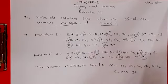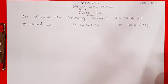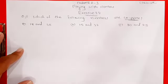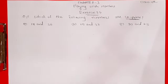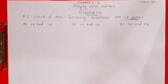Clear students. So in this way we can solve question number 4. This is question number 5: which of the following numbers are co-prime? First we need to know what co-prime means. If two numbers have only 1 as their common factor, then they are called co-prime numbers.